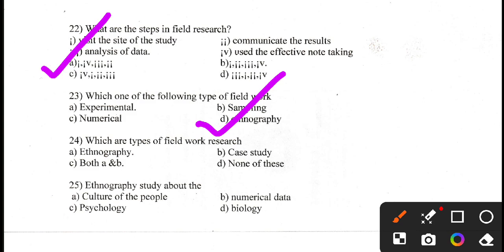Question number 24. Which are the types of field work research? Ethnography, case study, both A and B, or none of these. There is a slight difference between field work and field work research. The correct answer is both A and B — ethnography and case study are both types of field work research.